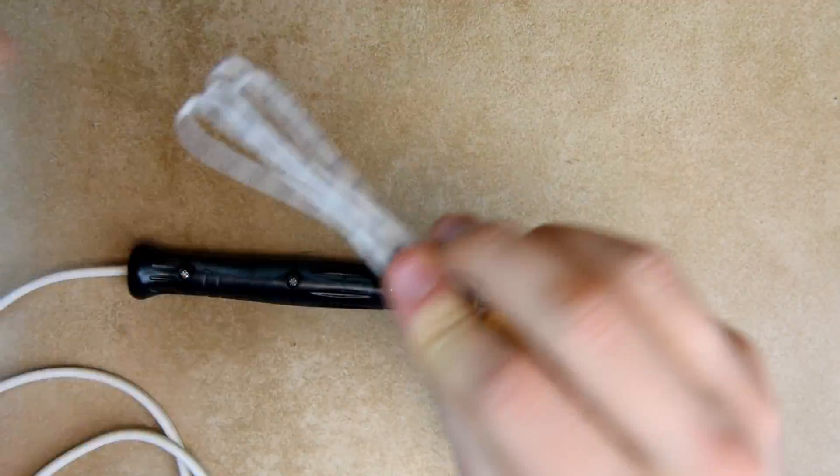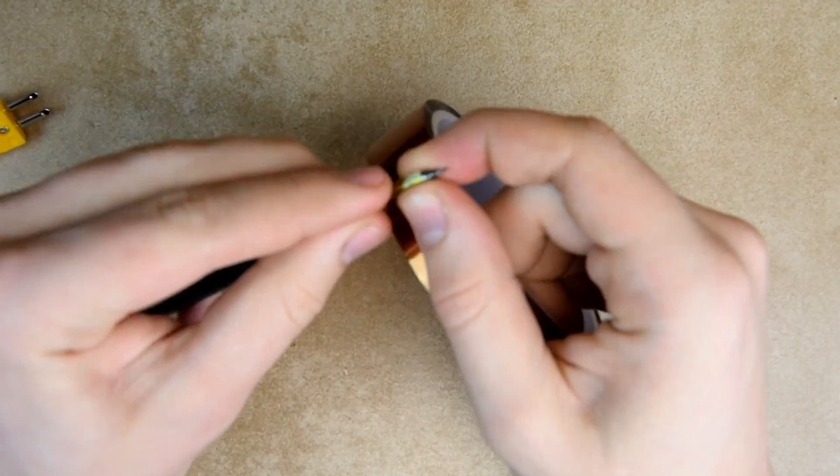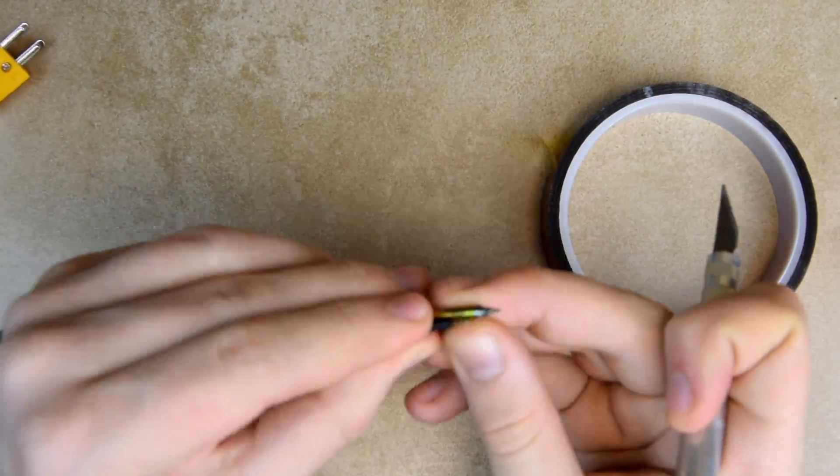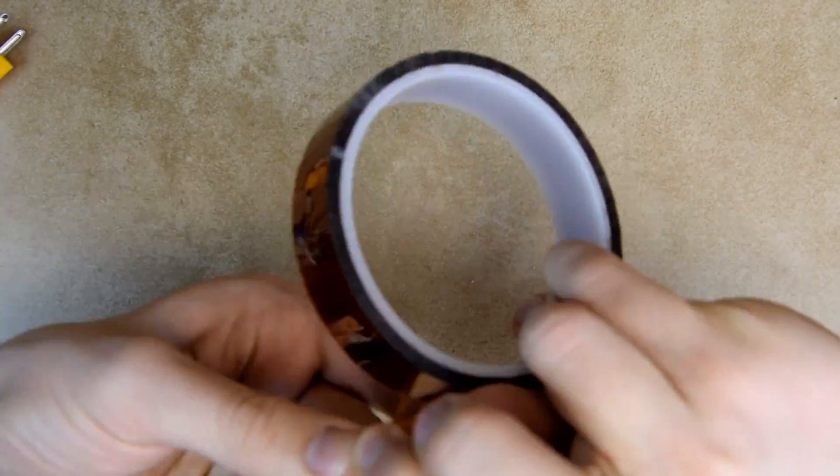Now it's time to attach the thermocouple to the tip. We put a single layer of Kapton to insulate the metal surface, then the sensor and a few more to secure it in place.